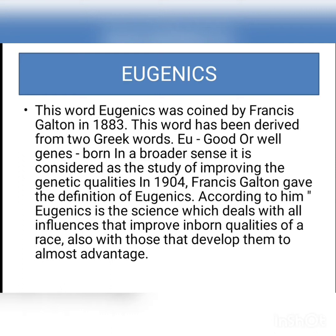According to Francis Galton, eugenics is the science which deals with all influences that improve the inborn quality of a race, also with those that develop them to the utmost advantage. In 1904, Francis Galton defined it as a science which works with all efforts to improve the offspring of nature and to go to more and more advantages.